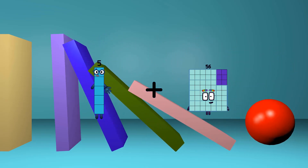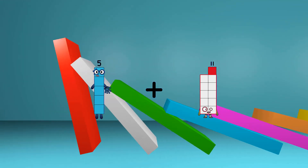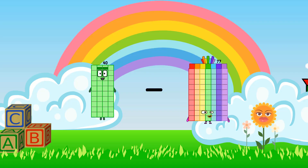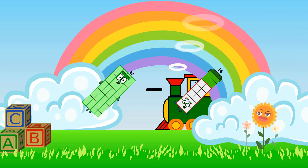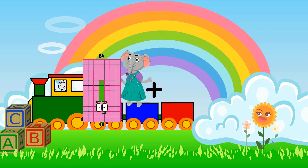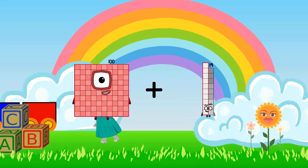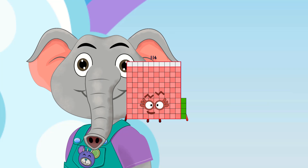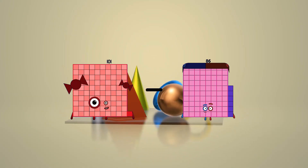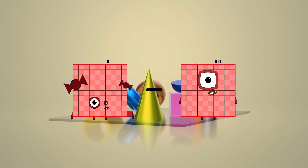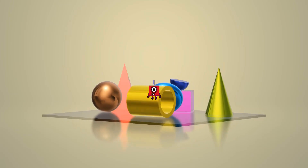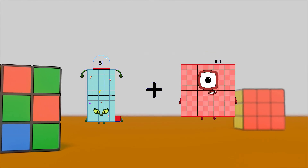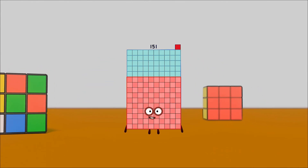5 plus 11 equals 16, 40 minus 14 equals 26, 100 plus 14 equals 114, 101 minus 100 equals 1.